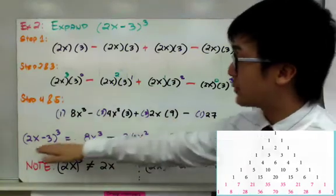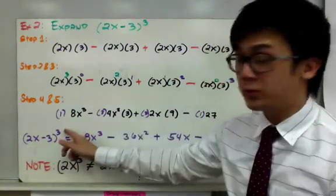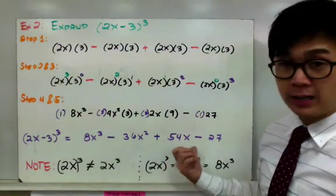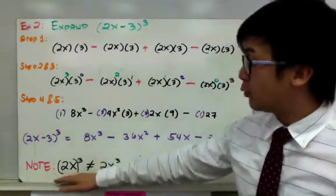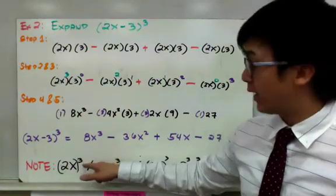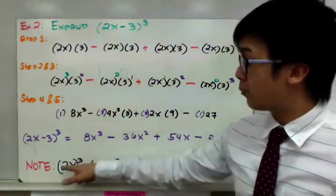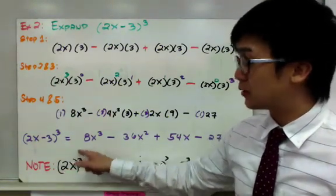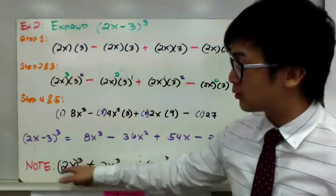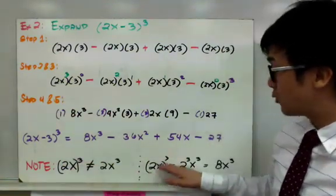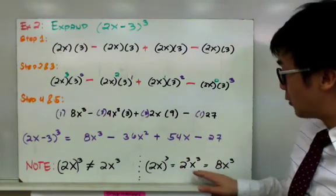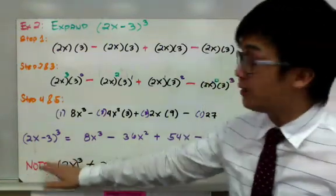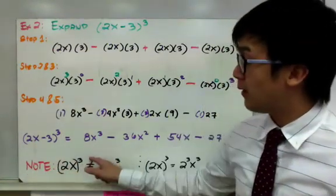So the final answer for expanding (2x − 3)^3 is 8x cubed minus 36x squared plus 54x minus 27. Take note that when you raise 2x to the third power inside parentheses, it's not the same as just 2x cubed — you need to distribute the exponent to both 2 and x. That's why (2x)^3 equals 2 cubed times x cubed, which is 8x cubed. This is a common error when expanding exponents with parentheses.